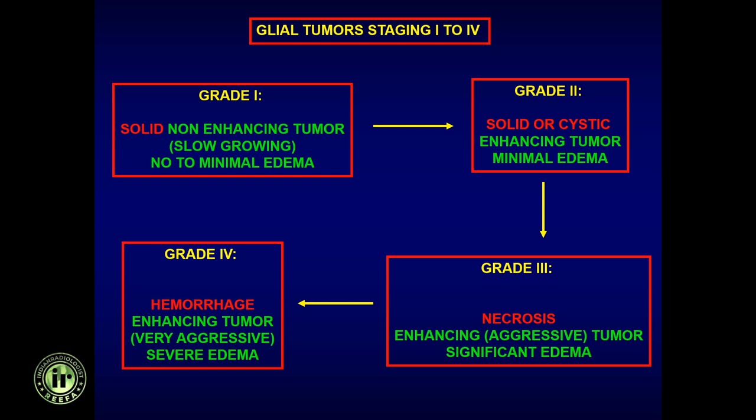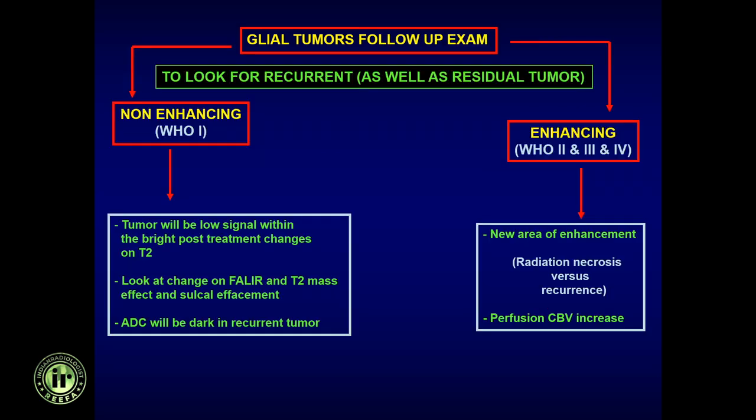So to summarize how we go from Grade 1 to Grade 4: Grade 1 is a solid non-enhancing tumor. Grade 2 — add minimal enhancement without necrosis. Grade 3 — add necrosis. Grade 4 — add hemorrhage into the necrosis. That is the overall summary of how we classify glial tumors.